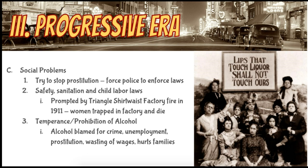One area where government got involved was the idea of temperance and Prohibition. Prohibition happens in the 1910s and 1920s and is largely pushed by women early on. The idea was that alcohol had been blamed for a lot of society's problems — battered women, lost wages, hurt families, unemployment. Many people thought alcohol was exactly what caused all of this. Women in particular, along with prohibitionists and teetotalers, were the people who early on pushed for Prohibition. Eventually there would be a constitutional amendment outlawing alcohol. They thought they were cleaning up society — literally bringing progress to America.